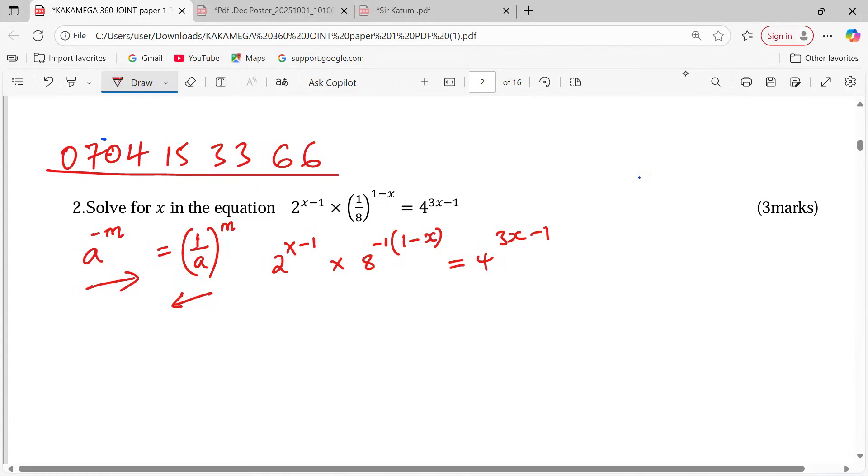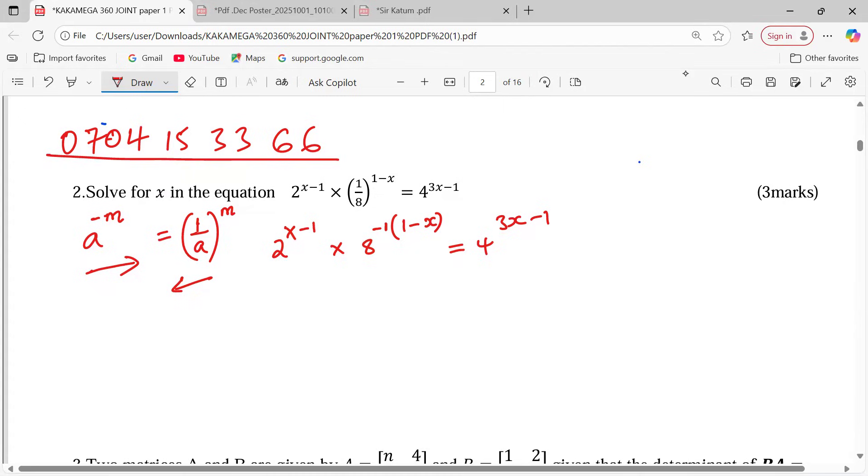Something else you're supposed to understand is that whenever we have composite numbers, we can express them in terms of the least possible base according to this equation. For example, we can express everything to base 2 here. 8 can be expressed as 2 power 3 and 4 can be expressed as 2 power 2.